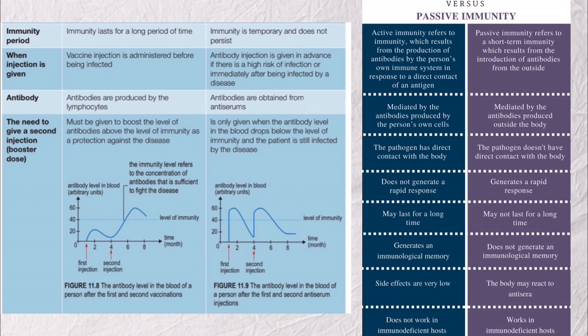The sixth aspect is when the injection is given. For active immunity, the injection is administered before being infected. For passive immunity, the injection is given in advance if there is a high risk of infection, or immediately after being infected by a disease.